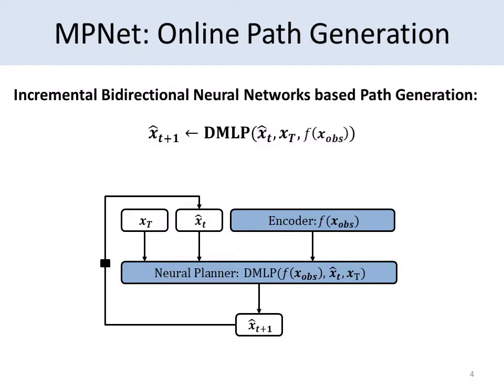During online execution, MPNet generates feasible paths using the trained models. The fully trained neural planner takes the start and goal configurations and the obstacle encoding from the encoder part of the contractive autoencoder to generate paths. Note that the start configuration at any time step is the configuration given by the neural planner in the previous time step. Thus, the method creates pathways incrementally.